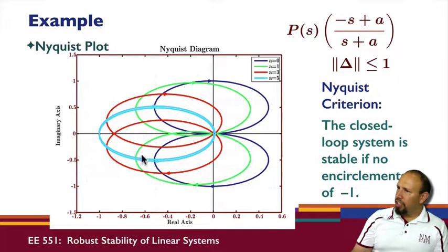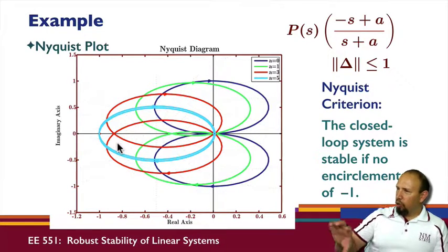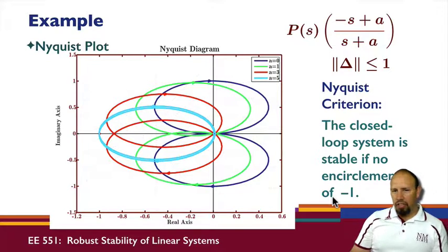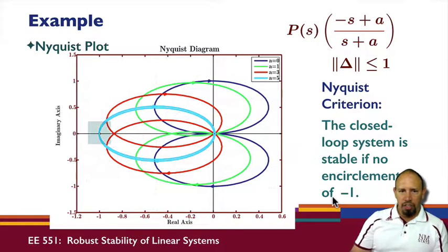For the Nyquist criterion, the closed-loop system is stable if there are no encirclements of the minus one point.